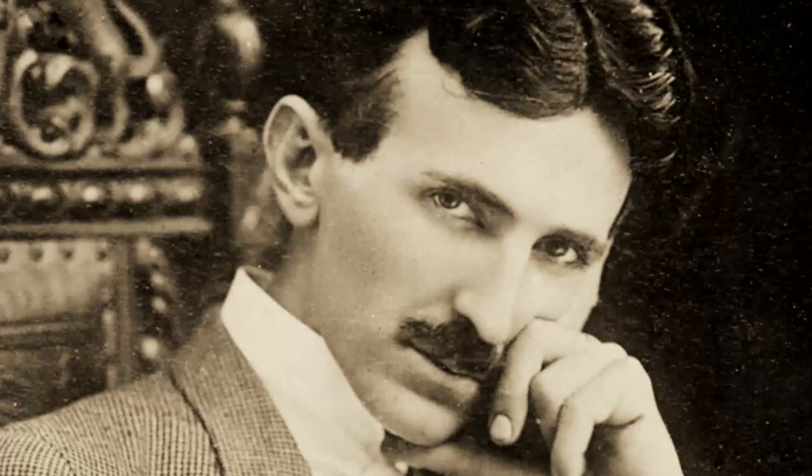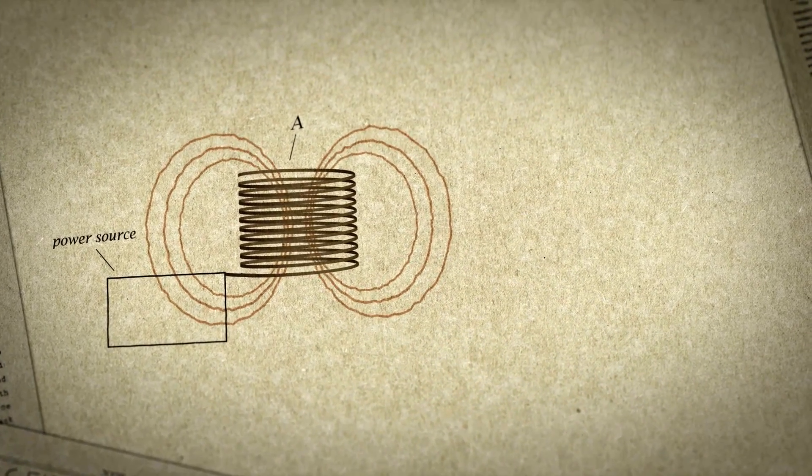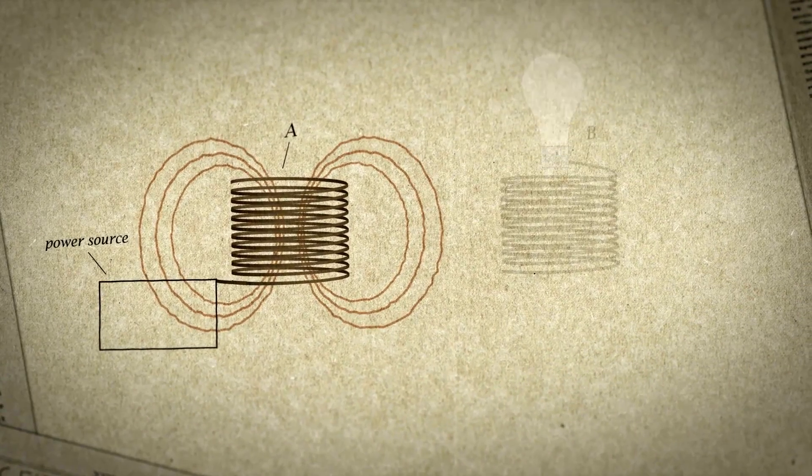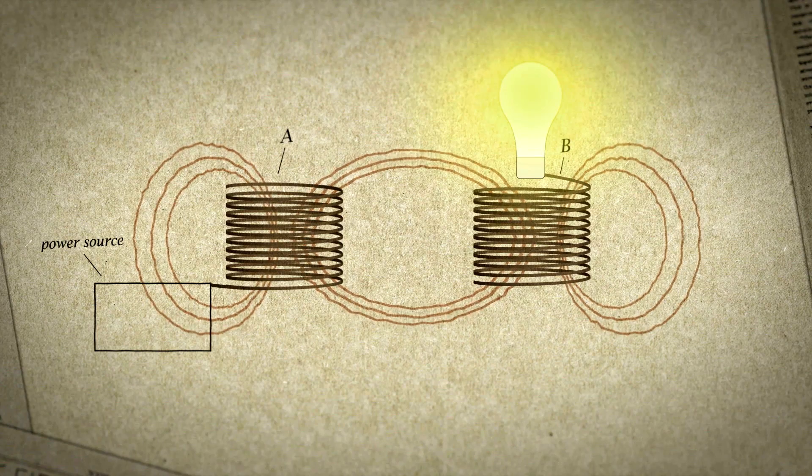What Tesla did is he basically understood that if you coil a Tesla coil, if you take this coil and you put current through this coil, it creates a magnetic field. And that magnetic field propagates through space. If you put a coil on the other side, it goes into the coil and then creates current on the other side. That concept as a whole is something that certainly was revolutionary.